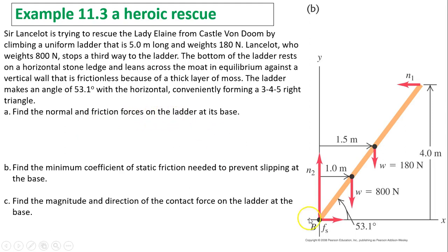Part A: Find the normal and friction forces on the ladder at its base. What is Fs and what is N2? Let's talk about the conditions for equilibrium: net force has to be 0. The net force in the x direction has to be 0, and the net force in the y direction has to be 0. In the x direction, Fs has to equal N1. In the y direction, N2 has to equal 800 plus 180, so right away we can figure out N2 is 980N. But we don't know Fs and N1; we only know they have to be the same magnitude and opposite direction.